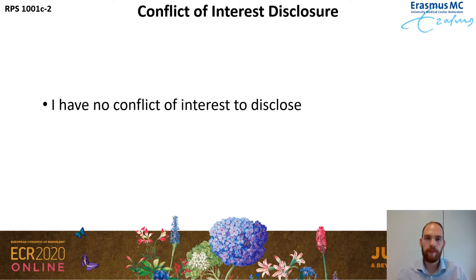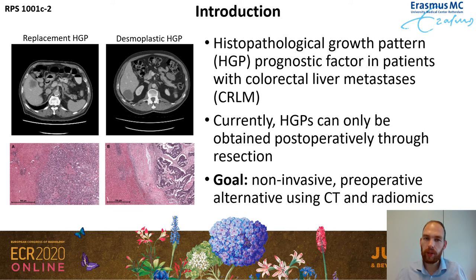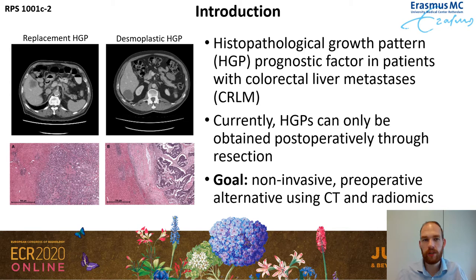We are looking at the histopathological growth patterns, or HGPs, of colorectal liver metastases. These HGPs are a prognostic factor of how well chemotherapy will work on these patients. Currently, HGPs can only be determined postoperatively after resection. However, it would be beneficial if before surgery we already know whether chemotherapy will help. Therefore, the goal is to find a preoperative non-invasive alternative using radiomics based on CT.